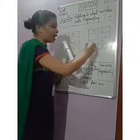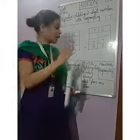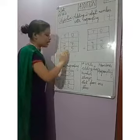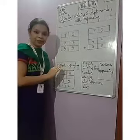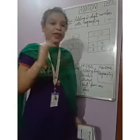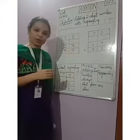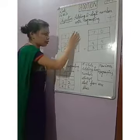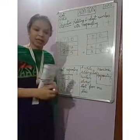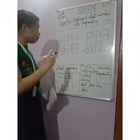Here I have taken two columns. To add two-digit numbers we have to make columns like that and put the numbers accordingly. When we add numbers, we always have to start from the 1's place.